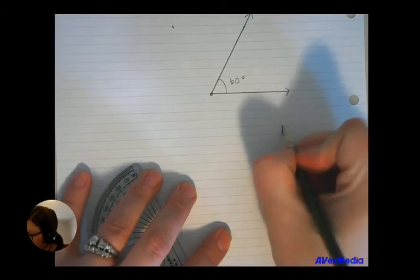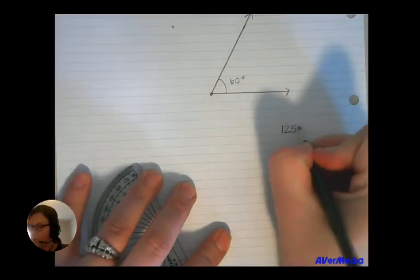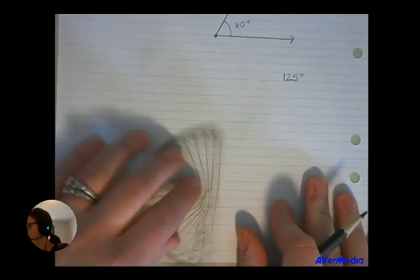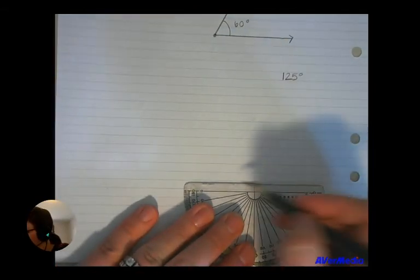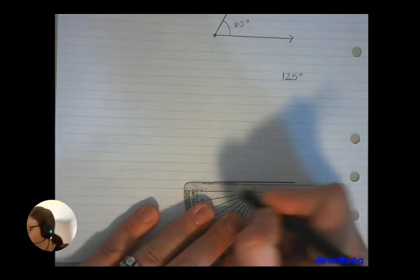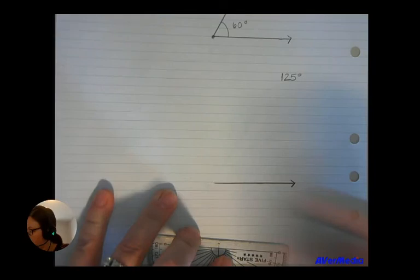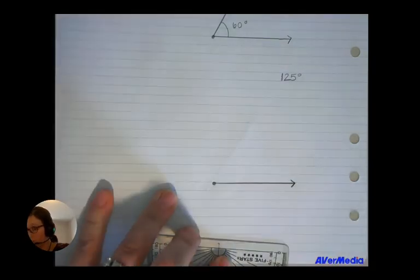Now I'm going to show you how to draw an obtuse angle. So I'm going to show you 125 degrees. So it starts the same. I'm going to use the bottom of my protractor to create the first ray in my angle. So I'm going to draw it right there nice and straight. I'm going to draw my arrow at the end.